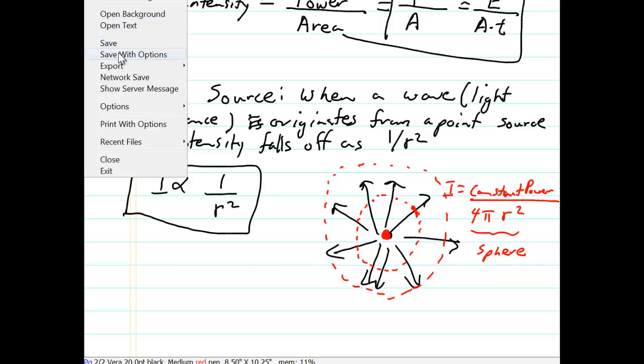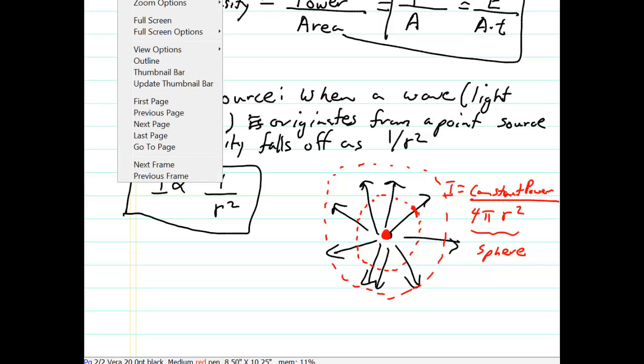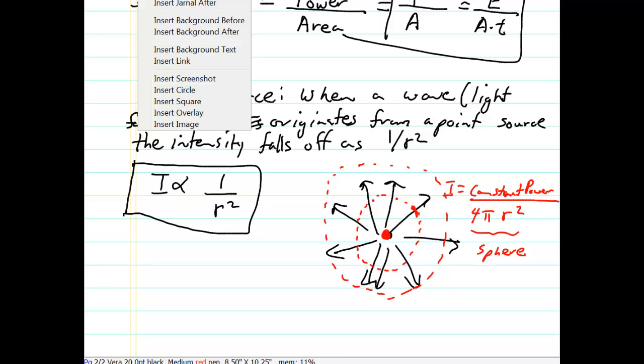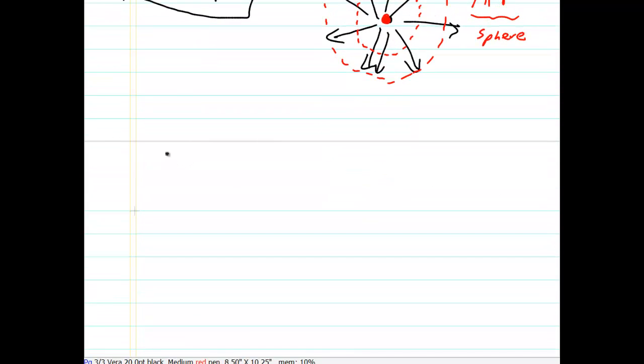For instance, there are things called lasers. So with this new page, what if you shot a laser? Well in the case of a laser, the light appears to go out kind of like this. It doesn't spread out.